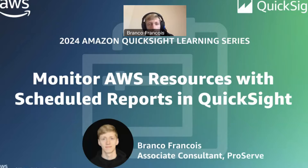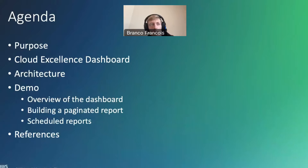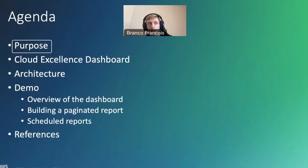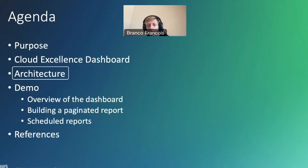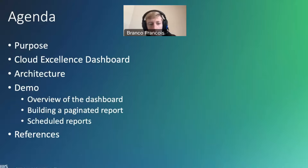For today's topic — monitoring AWS resources with scheduled reports in QuickSight — I propose we follow the following agenda. First I will explain the purpose of why this topic is so interesting and important, then I'll explain the solution I built, called the Cloud Excellence Dashboard. I will guide you through the architecture needed to implement this, then we'll go into a demo, and at the end I'll share some references so you can build this yourself.